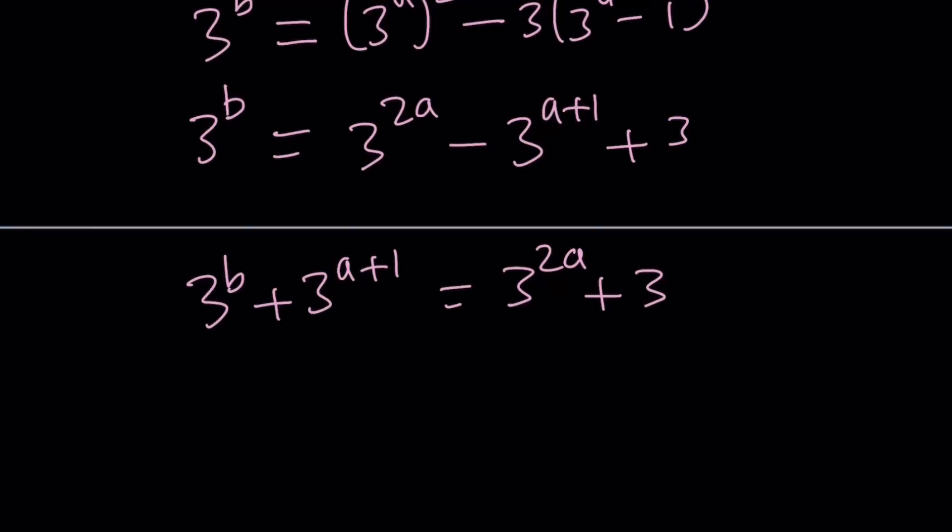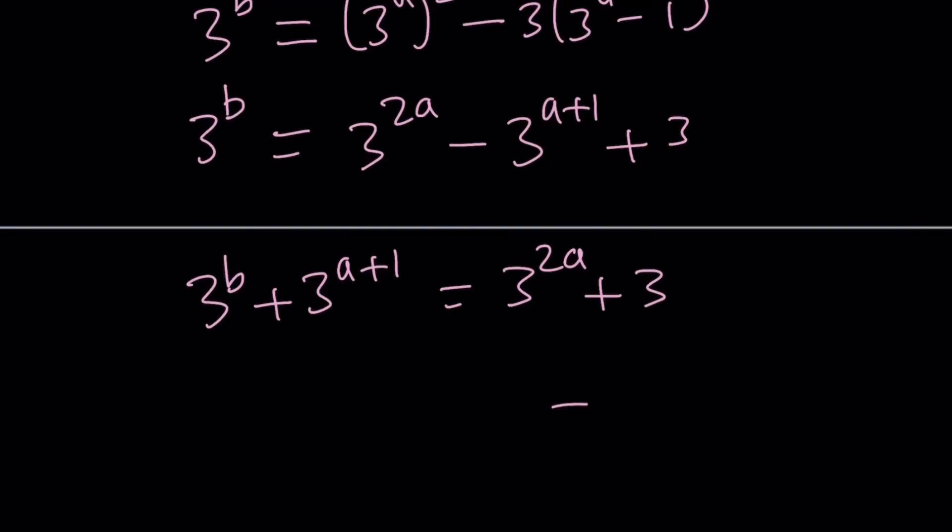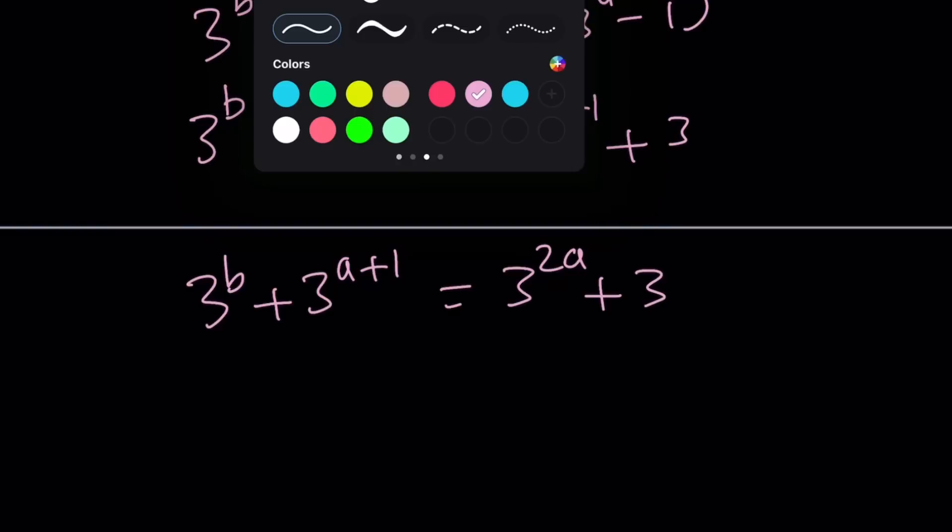Now, we have an interesting equation. Now, we're dealing with Diophantine equations. So, a and b are integers. But guess what? You're adding powers of 3 on both sides. If you add two powers of 3, whether they're the same or different, that can only be expressed as a sum of powers of 3. And you can only do it in a unique way. This should be somewhat intuitive. Let's go ahead and simplify this.